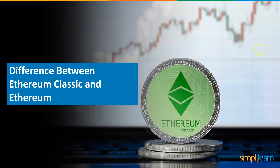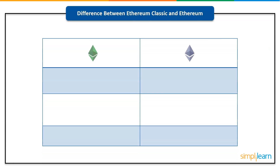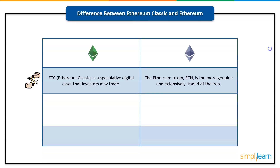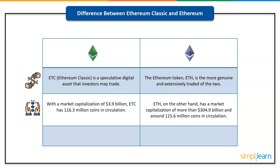ETC, or Ethereum Classic, is a speculative digital asset that investors may trade, but the Ethereum token, ETH, is the more genuine and extensively traded of the two. With a market capitalization of $3.9 billion, ETC has 116.3 million coins in circulation. ETH, on the other hand, has a market capitalization of more than $304.9 billion and around 115.6 million coins in circulation. ETC trades at $33.65 whereas ETH trades for more than $2,600 per coin.